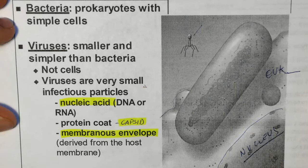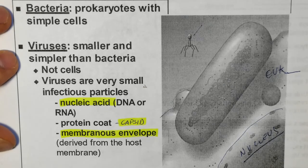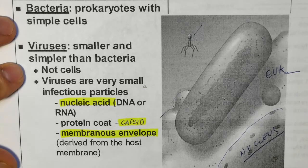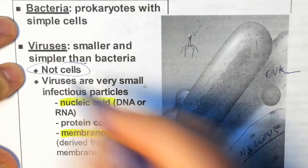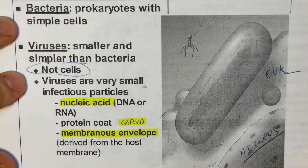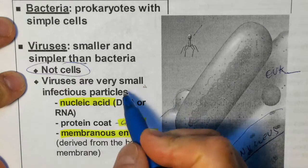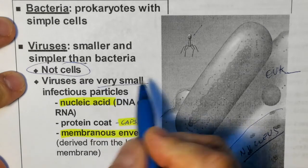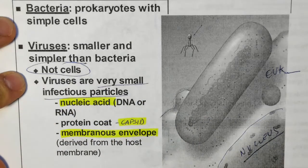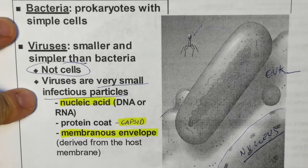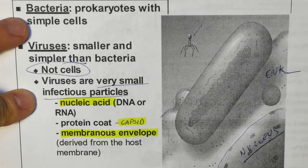Viruses are very simple creatures. They are technically not alive, and they are technically not cells, because they do not have all the components of a cell. Officially, we call them infectious particles. And a virus by itself, without a cell, cannot do anything.